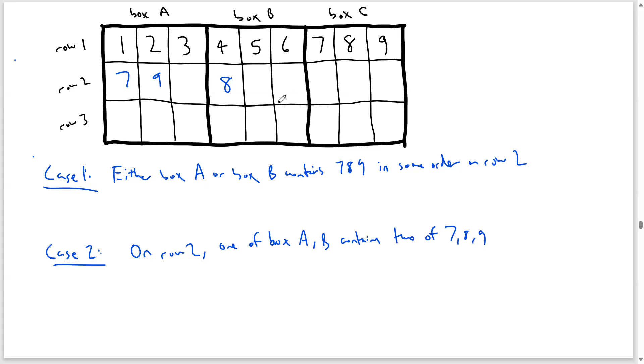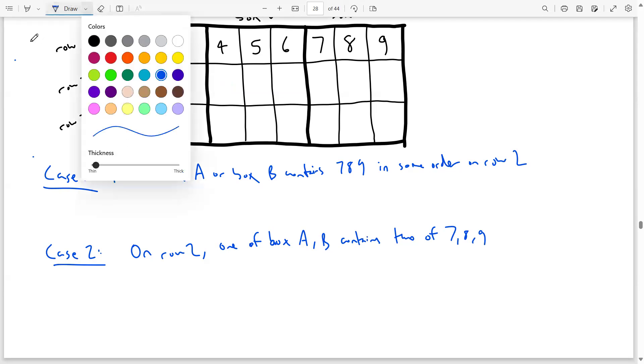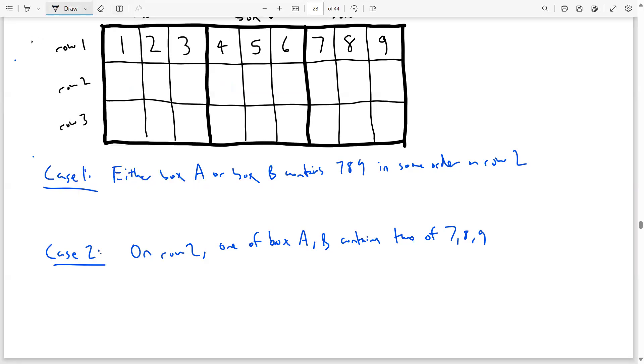Now we're going to start with case 1, where one of box A or box B contains 7, 8, 9 in some order on row 2. This is actually the simplest case. The reason why is because once we know that either box A or box B contains 7, 8, 9, this is going to uniquely determine the numbers in row 2 for the other boxes.